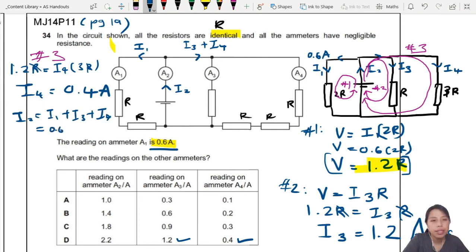I1 is 0.6, I3 is 1.2, I4 is 0.4. So what is I2? Let's check. It is 2.2, yay.